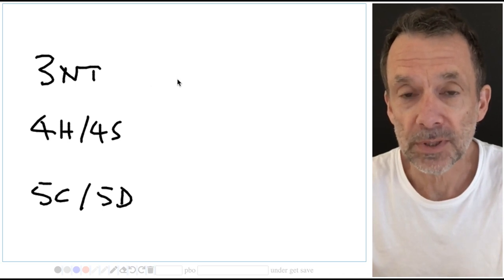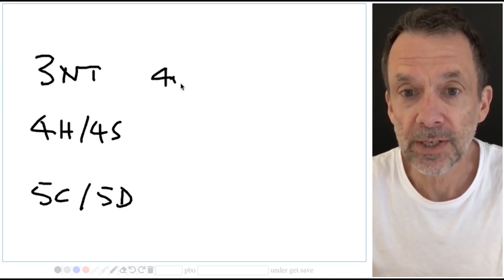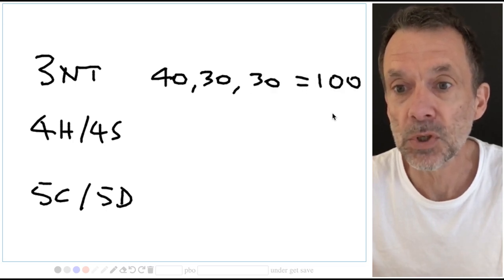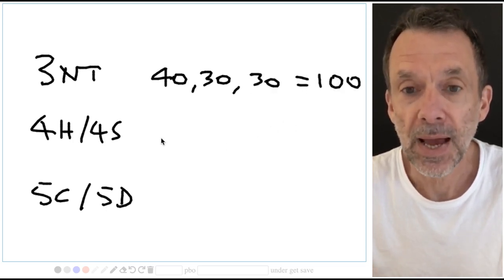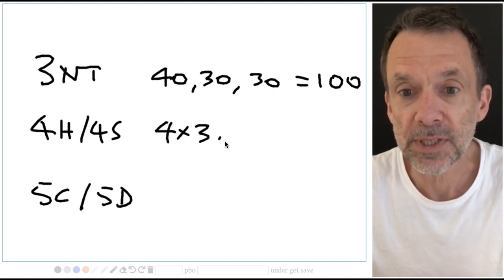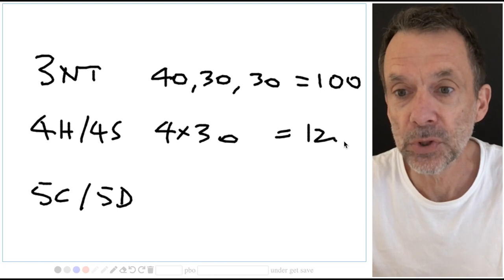Well three no trumps, 40 for the first trick, 30 for the second trick, 30 for the third trick equals 100 points. Hearts and spades, four hearts, four spades, 30 points each equals 120 points.